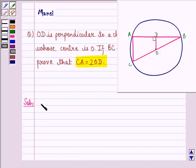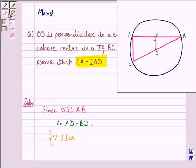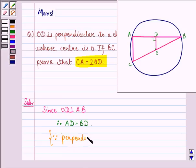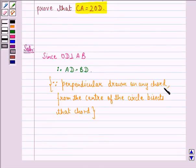And now we can start with the proof. Since OD is perpendicular to AB, therefore AD is equal to BD. Because we see that perpendicular drawn on any chord from the center of the circle bisects that chord.